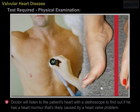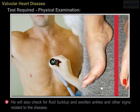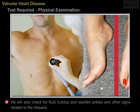Tests required. Physical examinations. The doctor will listen to the patient's heart with a stethoscope to find out if he has a heart murmur caused by a heart valve problem. He will also check for fluid build-up and swollen ankles and other signs related to the disease.